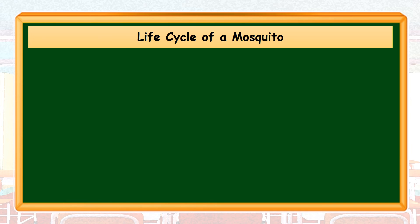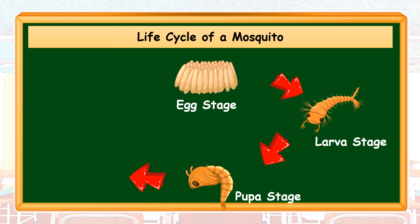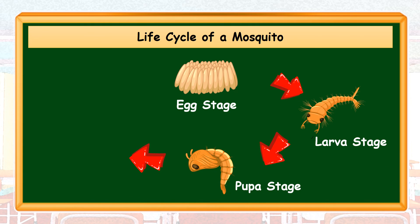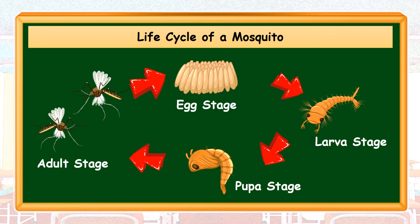Let's have a recap of the life cycle of a mosquito: egg stage, larva stage, pupa stage, and adult stage. And the life cycle of a mosquito will continue.